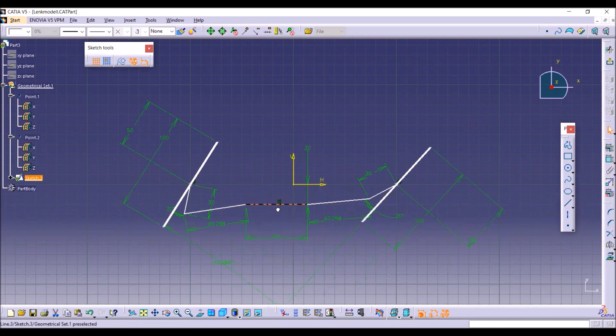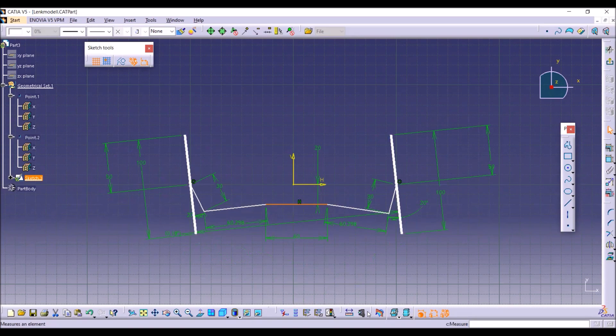On the other hand, the inner wheel turns a bit faster and this creates an angle difference between both wheels.